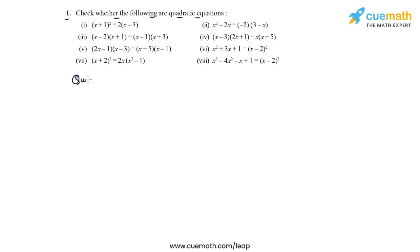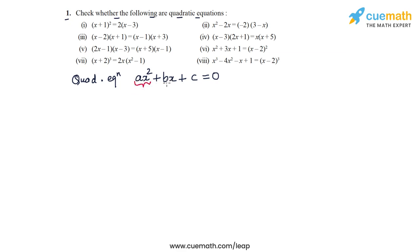A quadratic equation is any equation of the form ax² + bx + c = 0. In a quadratic equation you must have a quadratic term — a term in which the power of the variable is 2 — and if this term is missing then the equation is not a quadratic equation.